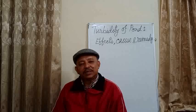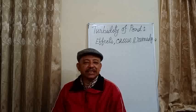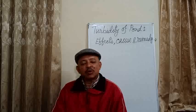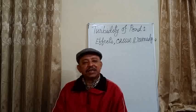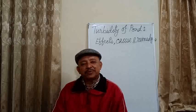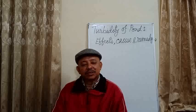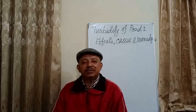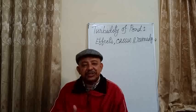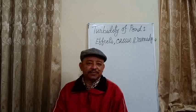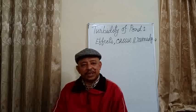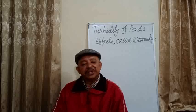Turbidity of pond is the presence of silt or soil particles suspended in the pond water. Transparency and turbidity are two related terms. Transparency refers to the presence of different types of aquatic feed and particles including soil particles, which inhibit the penetration of light in water.